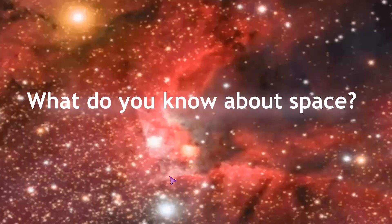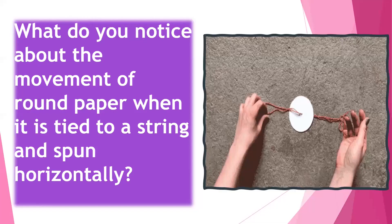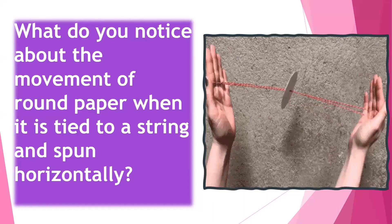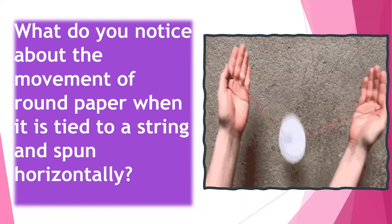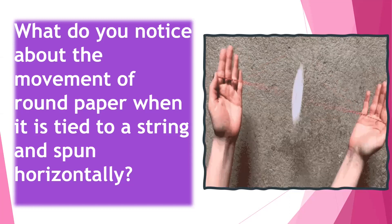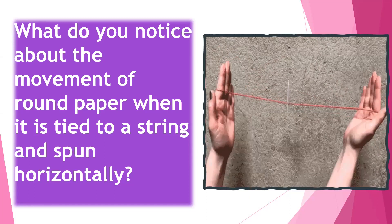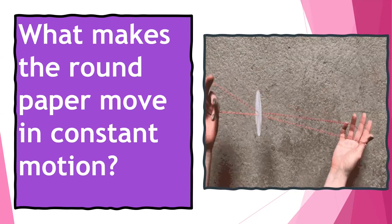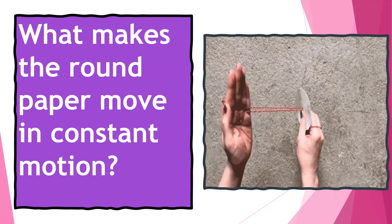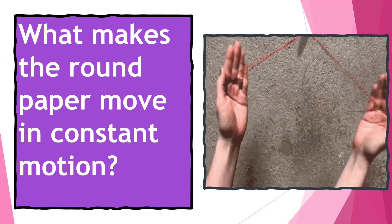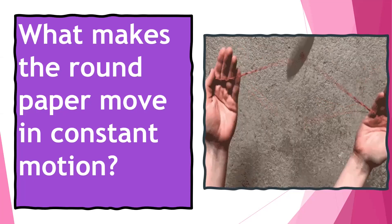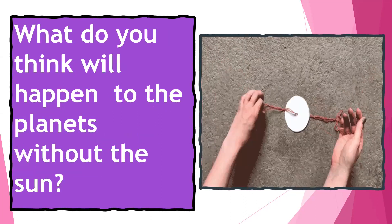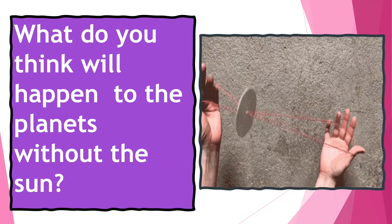What do you know about space? What do you notice about the movement of the round paper when it is tied to a string and then spun horizontally? What makes the round paper move in constant motion? And lastly, what do you think will happen to the planets without the sun?